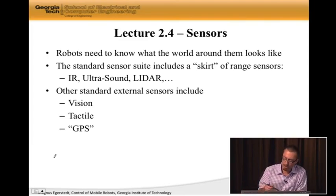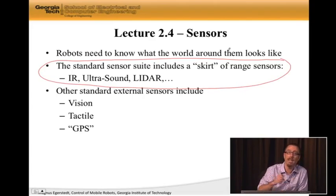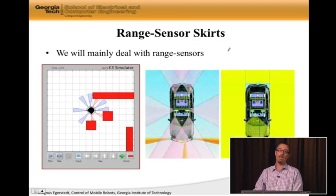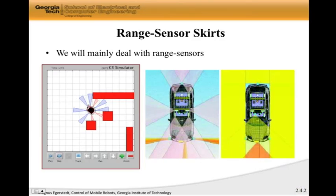But what we're going to do, mainly, is assume that we have this kind of setup. A skirt around the robot that can measure distances to things in the environment. And in fact, here's the Khepera. It's a simulation of the Khepera. And the Khepera, in this case, has a number of infrared sensors.